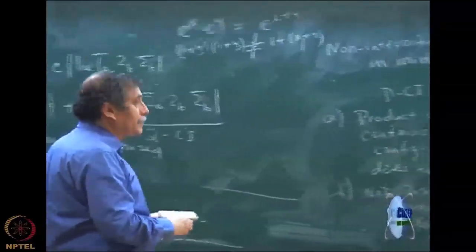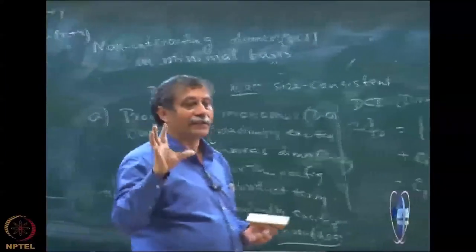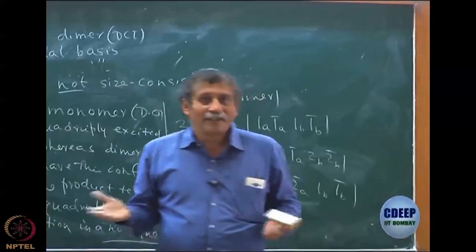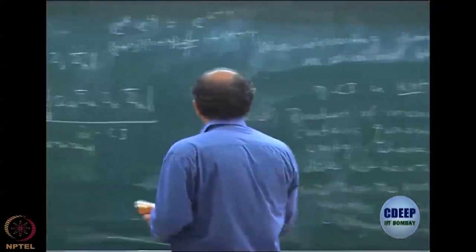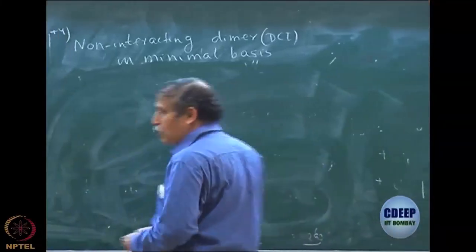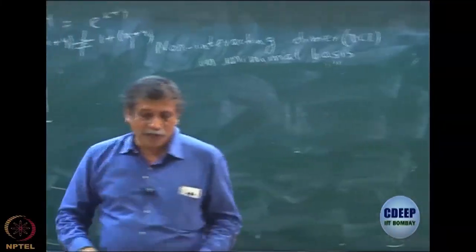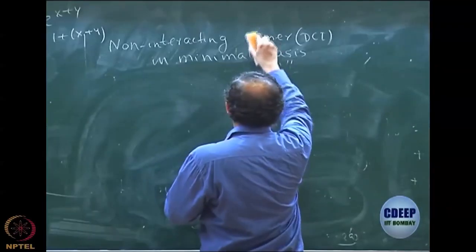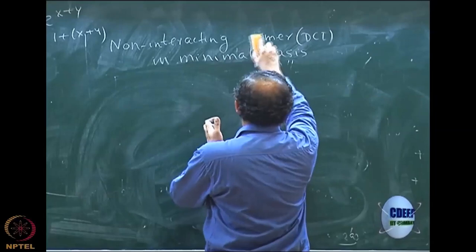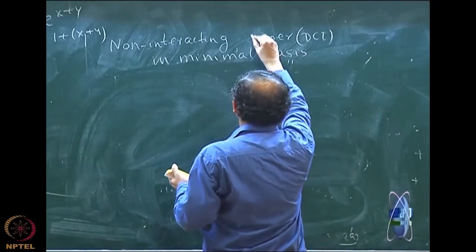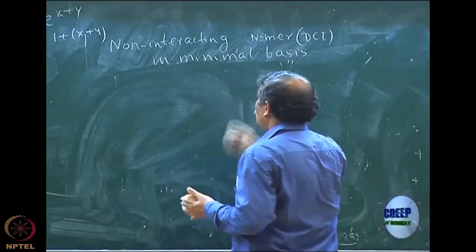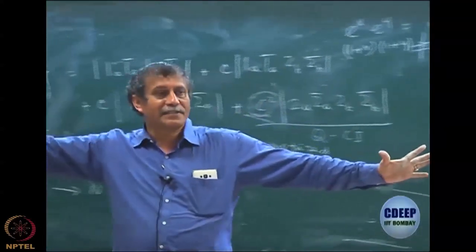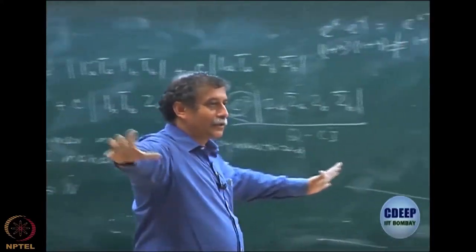Let me tell you what happens when 2 becomes n. I think all of you can set up the CI matrix once again. So, let us now look at not just dimer but non-interacting n-mer. I have n hydrogen molecules, each of them again in minimal basis set.